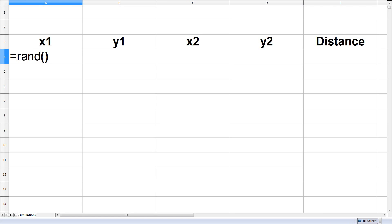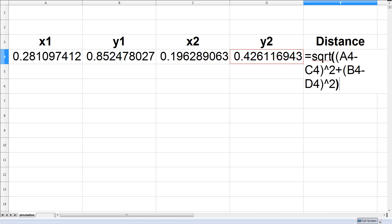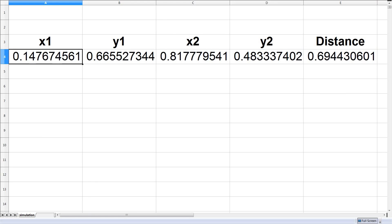We can generate a random coordinate between 0 and 1 using the rand function, which generates a random number between 0 and 1. In each trial we'll take the distance by calculating the square root of the difference of the x coordinates squared, and then adding it to the difference of the y coordinates squared. This will give us a distance in one trial. We'll copy this down over 10,000 trials.